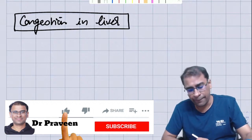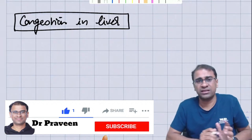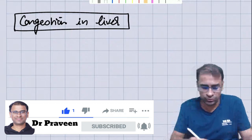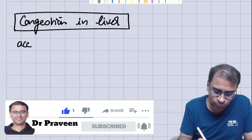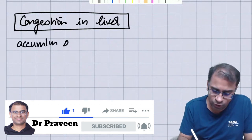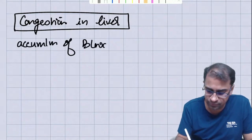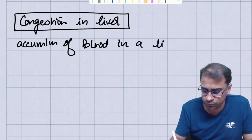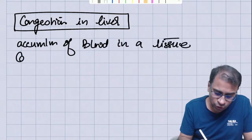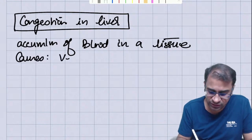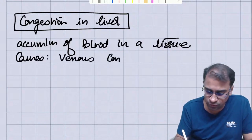Condition in the liver. First of all, what is Condition? Condition means accumulation of blood in a tissue. The cause of Condition is venous constriction or venous outflow obstruction.